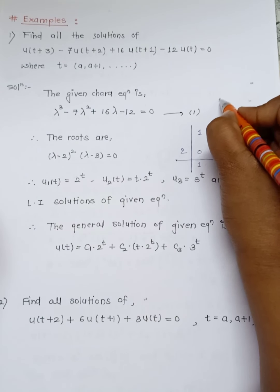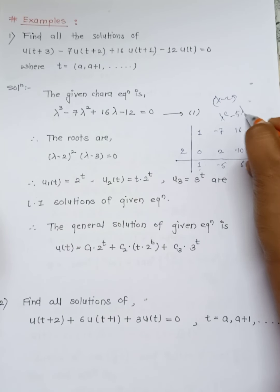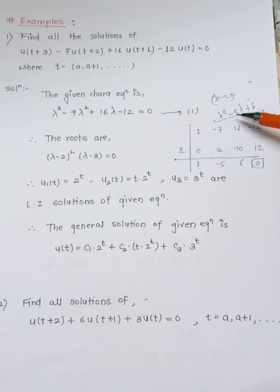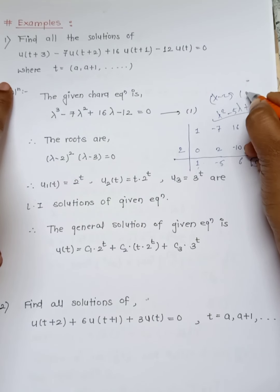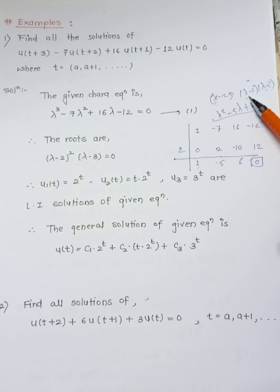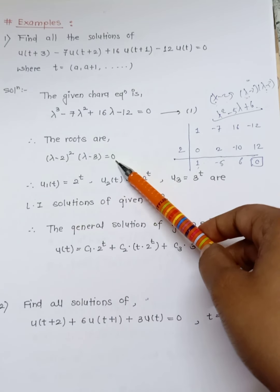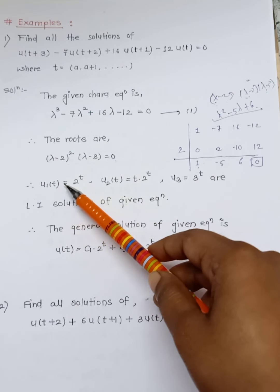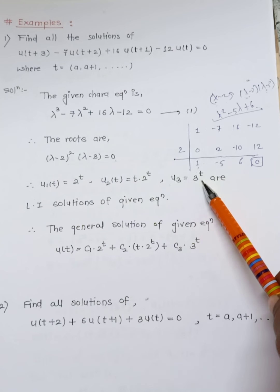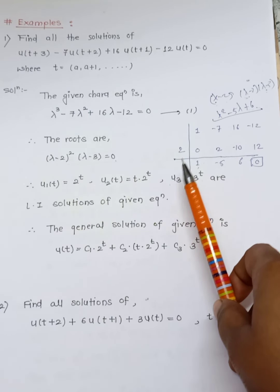The first root is λ=2, giving factor (λ-2). The remaining quadratic is λ² - 5λ + 6. Factoring this quadratic: the roots multiply to 6 and add to -5, giving (λ-2)(λ-3). So all three roots are: (λ-2)² and (λ-3) = 0. Therefore the linearly independent solutions are: u₁(t) = 2^t, u₂(t) = t·2^t, and u₃(t) = 3^t.